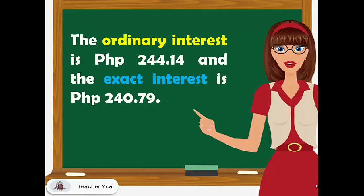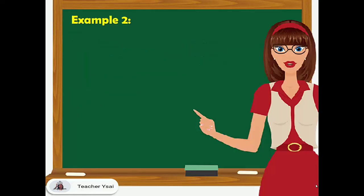Therefore, the ordinary interest is 244 pesos and 14 centavos and the exact interest is 240 pesos and 79 centavos. Observe that the ordinary interest is greater than the exact interest.